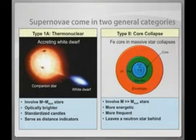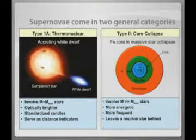There's a lot of work in supernovas. This is really interesting. There are two kinds: thermonuclear and core collapse.